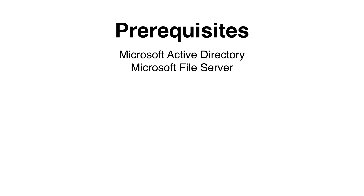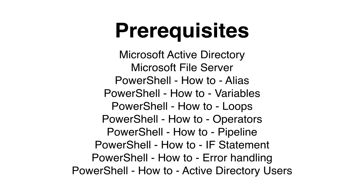We are going to create home directories and group directories, therefore it would be a good idea to do this on a file server, however this is also not a necessity. You will need to have a full understanding of how to work with aliases, variables, loops, operators, the pipeline, the if statement, handling errors, and you need to know how to import the Active Directory module if you don't have it installed on your computer. If you are unsure or would like to refresh your memory, please visit one of my earlier sessions.